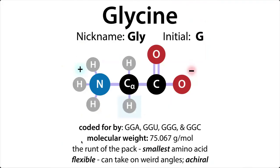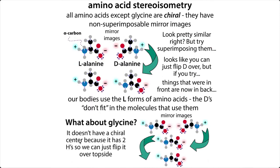Another interesting thing about glycine is that it's achiral, which means that unlike the other amino acids, which kind of have a right and a left hand — non-superimposable mirror images of one another — glycine just has one. So it's universal; you can flip it either way and it'll still look the same, so we call it achiral. You don't have those L and D versions like you would for the other amino acids.